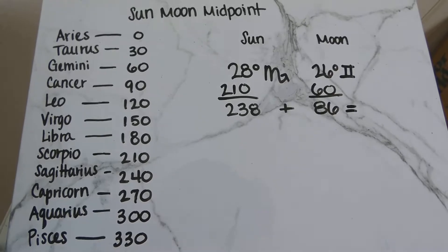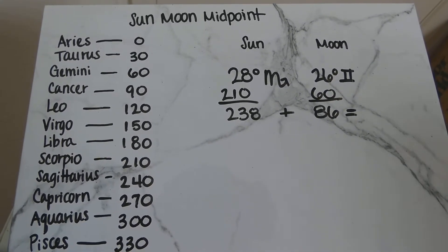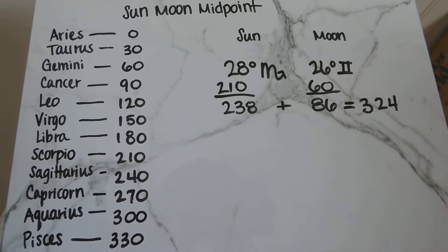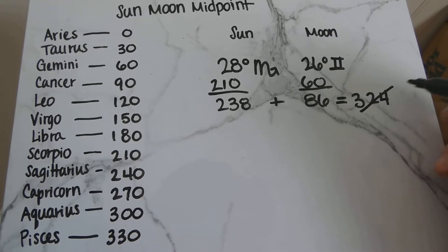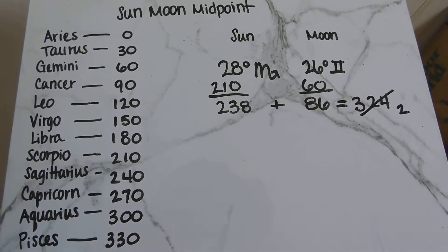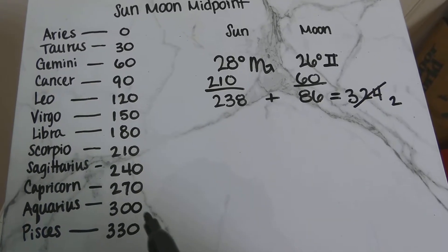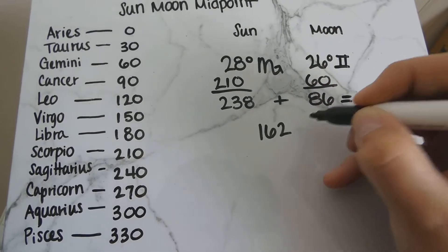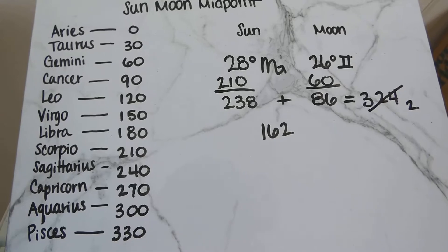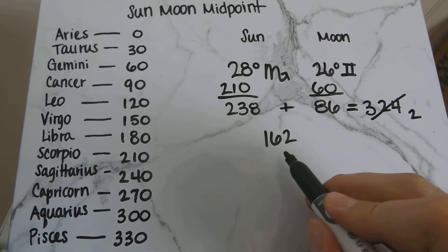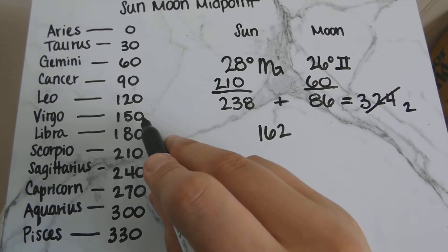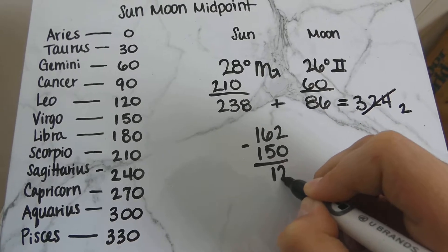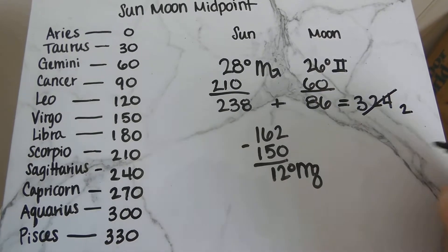Now that they're converted into our 360 degrees we get 324. That is not our final number — we have to cut that in half because that is just our average number, even though it does fit within the 360 degrees. So what we really want is 162. Now we can go ahead and convert it back to our normal degrees. What's closest to 162 is 150 degrees, which is Virgo. So we take out 150 degrees, and that leaves us 12 degrees Virgo as our midpoint.